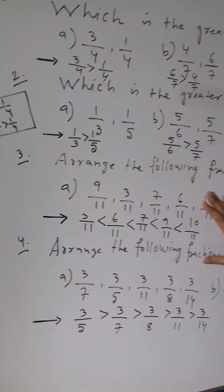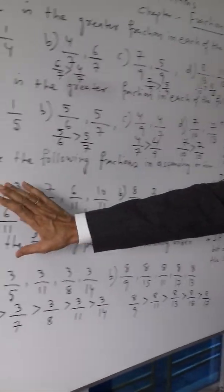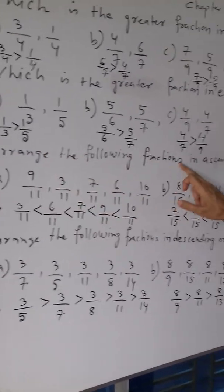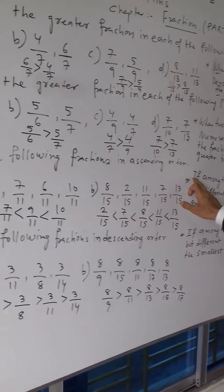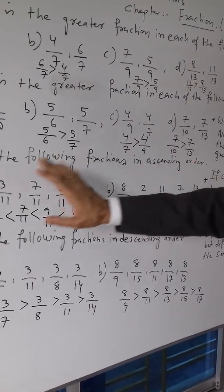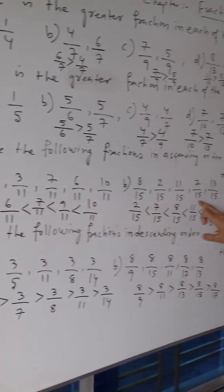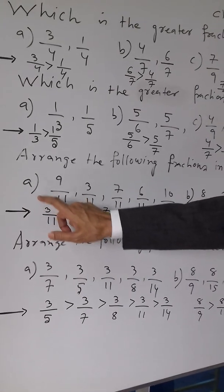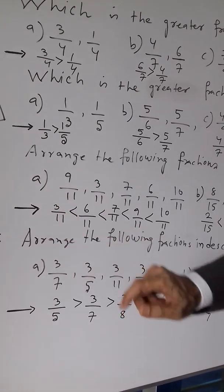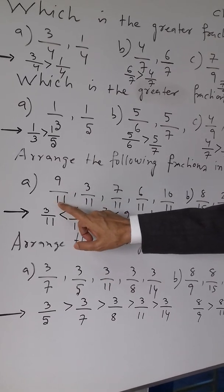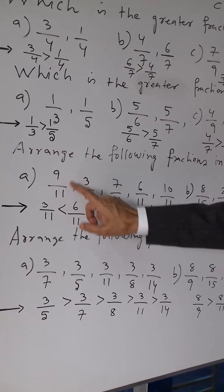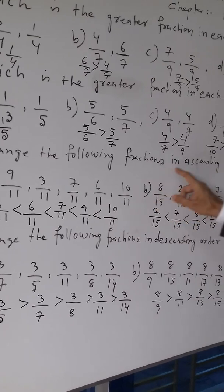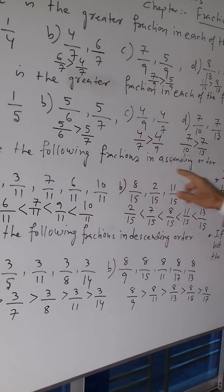Questions of this sort also appear in examinations. Arrange the following fractions in ascending order. Question 3a: you have been given 9 by 11, 3 by 11, 7 by 11, 6 by 11, and 10 by 11. You have to arrange these in ascending order.